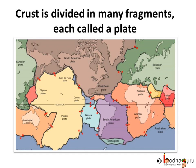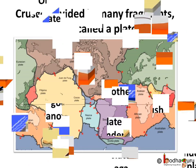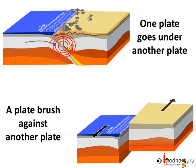What causes this terrifying natural disaster? Generally, it is caused by the disturbance deep inside the earth's crust. As you know, the crust is the outermost layer of the earth and it is not in one piece. It is fragmented, and each piece is called a plate. When a plate brushes against another plate, or a part of a plate goes under another plate due to collision, they cause disturbance in the earth's crust.